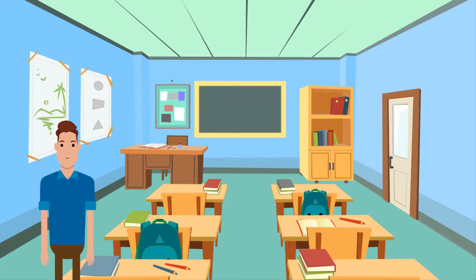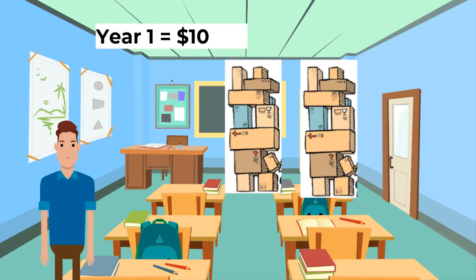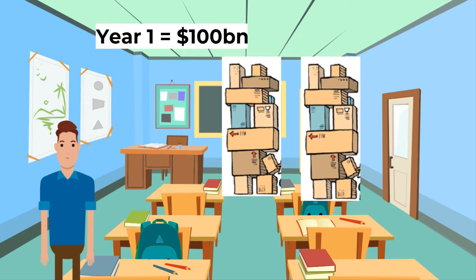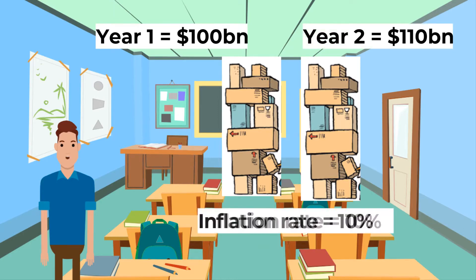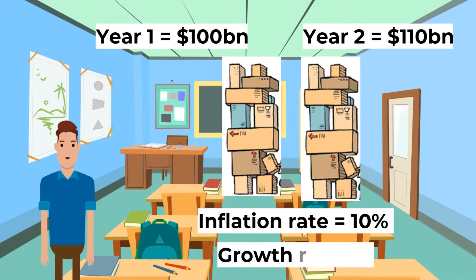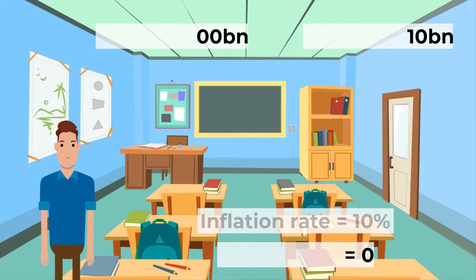As prices rise, the total value of output, or nominal GDP, will also rise — but there may be no actual increase in the volume of goods and services produced. If the volume of goods and services expands, then real GDP will have increased. For example, if in year one GDP was equal to $100 billion, and in year two GDP was equal to $110 billion, but inflation was 10%, there has been no change in real GDP.